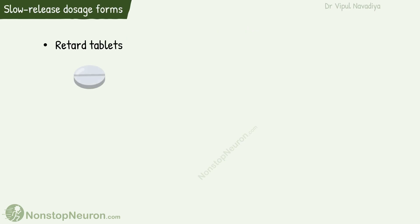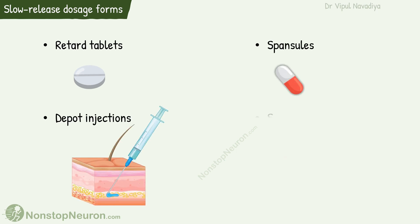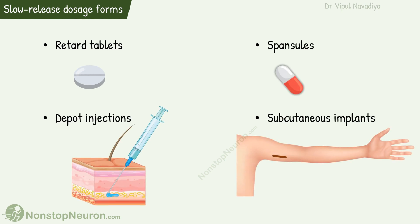First, slow-release dosage forms. They include retard tablets, spansules, depot injections, and subcutaneous implants. As per the name, they release the drug slowly, so absorption is slowed and prolonged action can be obtained.